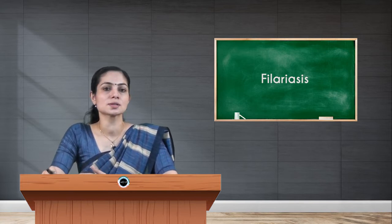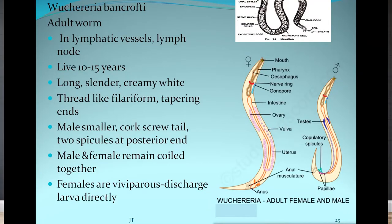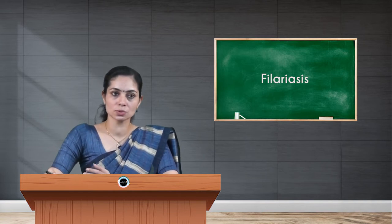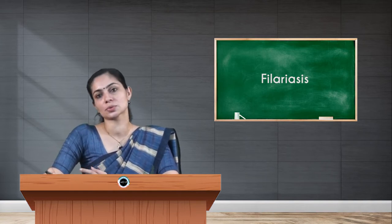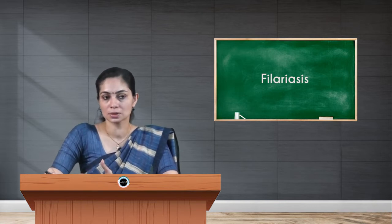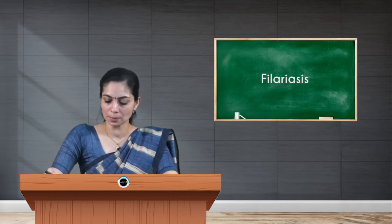Looking at the adult worm morphology: it survives in lymphatic vessels or lymph nodes and lives for around 10 to 15 years. Adult worms are slender, creamy white, thread-like filariform larvae with tapering ends. Males are usually smaller with a corkscrew tail and two spicules at the posterior end; they remain coiled with the female. Female worms give rise to larvae directly — they are viviparous.